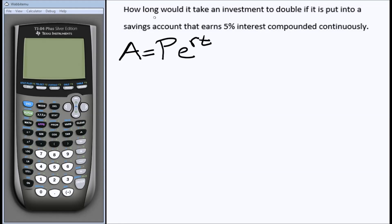So let's read the problem. How long would it take an investment to double if it's put into a savings account that earns 5% interest compounded continuously? Well, the first thing we notice, the only number we're given is 5%. How are we going to find the answer to a problem when all we're given is one of the four pieces? Well, this has a little something to do with the concept of doubling.